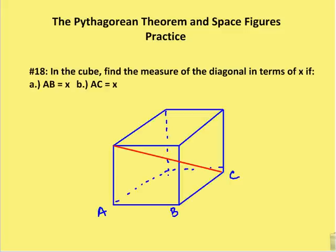Find the measure of the diagonal in terms of x if AB is equal to x and then AC is equal to x. So remember, in a cube, it's a rectangular solid in which all of the edges are going to be congruent. So if I say that AB is going to be x, then I know that all of the edges will be congruent. So let's go ahead and solve the problem.